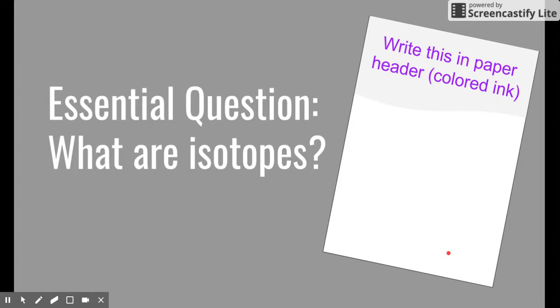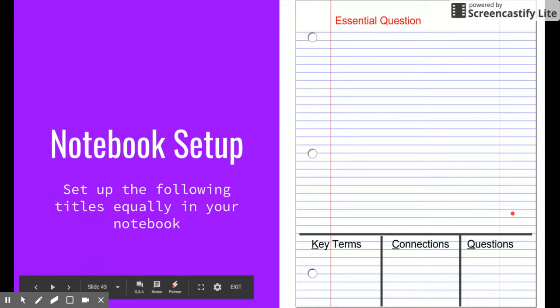Let's start with the essential question: what are isotopes? Please write this in colored ink at the top of your page. You might also want to take the opportunity to set up your notebook in the KCQ style, the modified Cornell style of notes. Key terms - at the end of the notes make sure you're recording the key terms that we've been talking about, those vocab terms. Anything that you can connect to prior things we've done in class or even things in your life you can write down here, and then finally any questions you may have or a test question that is a good review for the upcoming test.